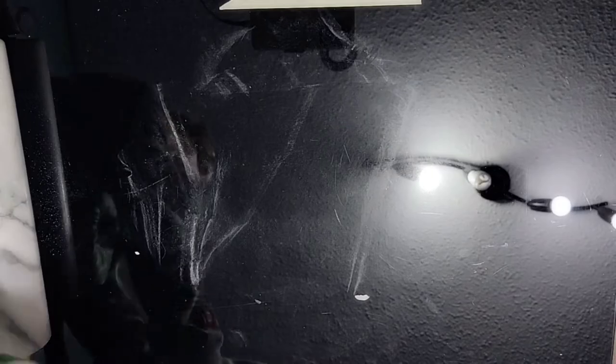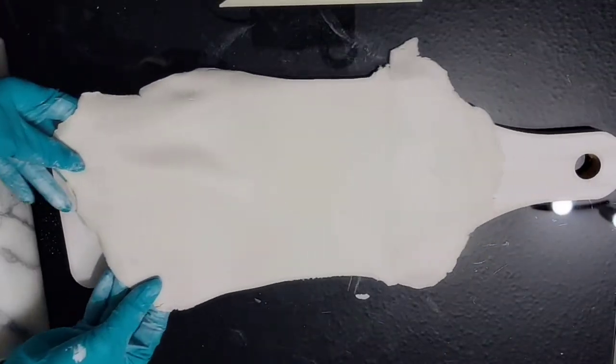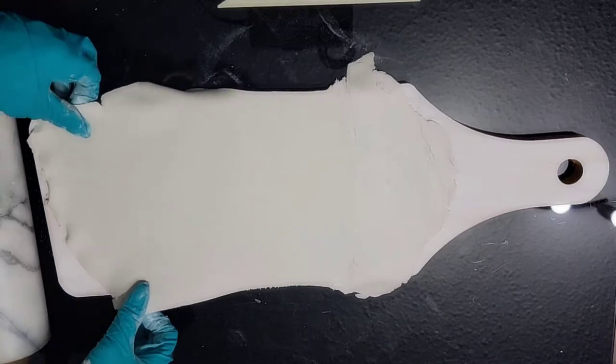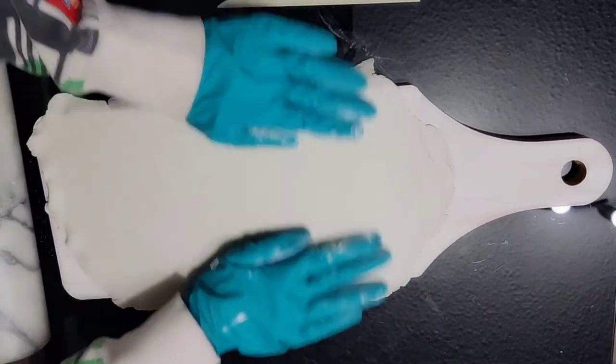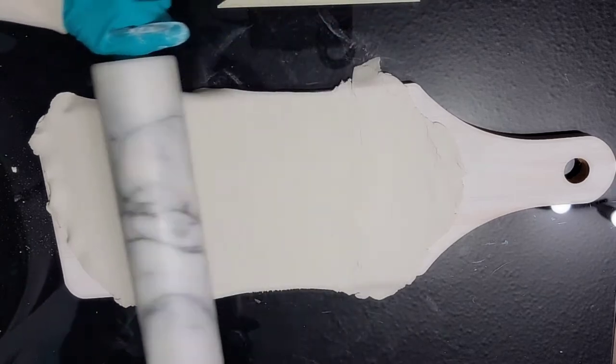When we get it big enough, we're just going to put that directly onto our board and we can cut our shape right on there. It makes it easier—then we can roll it right on there too.